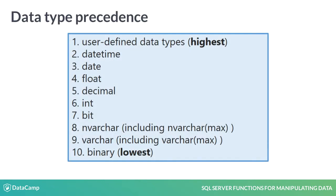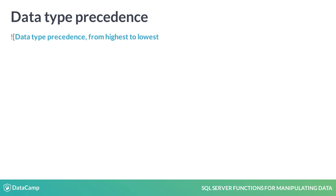For every comparison present in a WHERE clause, the data type of the two operands is evaluated. If they differ, SQL Server will check if one can be automatically converted to another without data loss. This means, for example, that we cannot implicitly convert a decimal number to an integer because we would lose the information after the decimal point. For this, a precedence list has been created with the order of the data types.